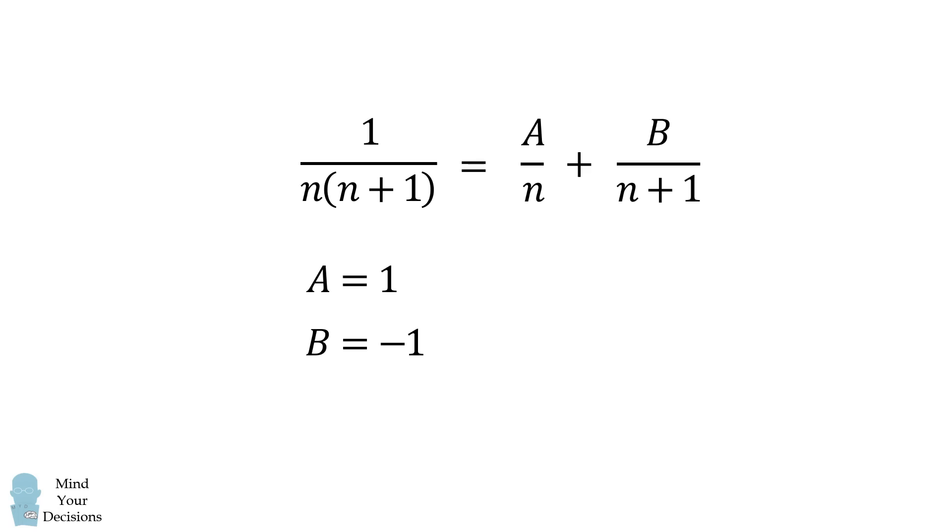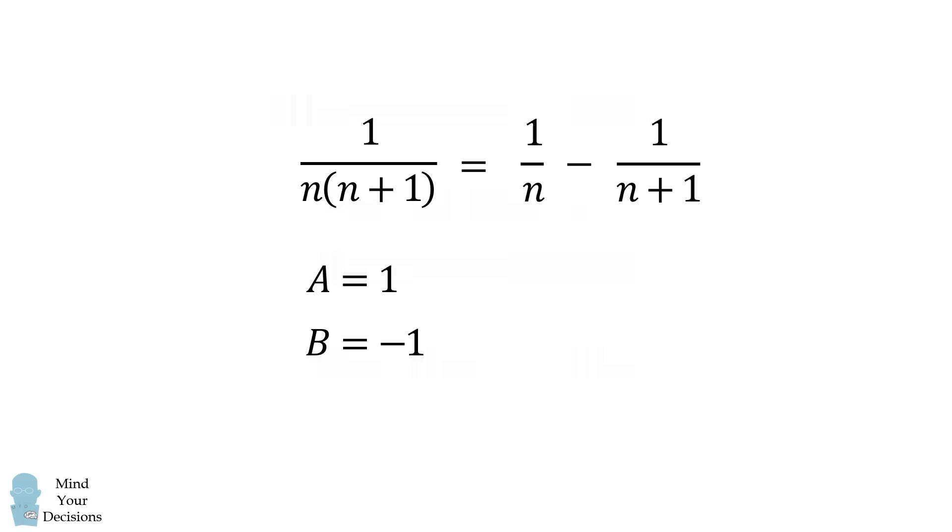We've thus solved for the values of a and b. So the partial fraction decomposition will be equal to 1 over n plus negative 1 over n plus 1. And we can rewrite the second term as minus 1 over n plus 1. So now let's solve the problem.